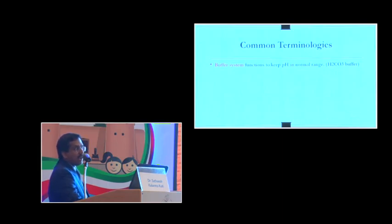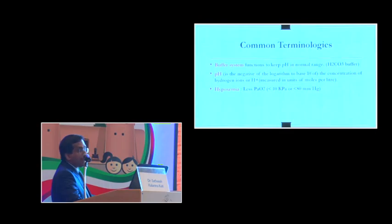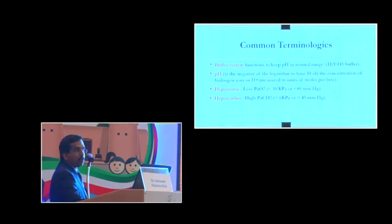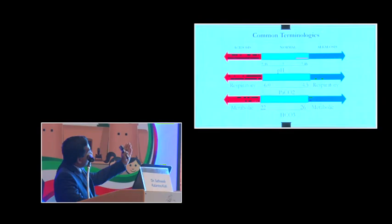Some terms you come across while reading a BGA include buffer system, which functions to keep the normal pH in the normal range. pH indicates the concentration of hydrogen ions in the system. You call it hypoxemic when the PaO2 is less than 10 or less than 80 mmHg. You call it hypercarbia when your PaCO2 is more than 6 kilopascal or more than 45 mmHg. Less than 7.35 is acidosis, more than 7.45 is alkalosis.